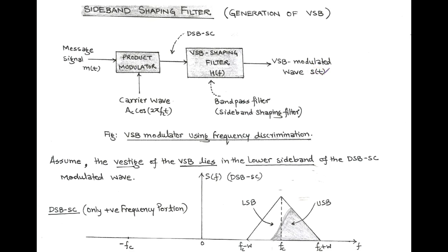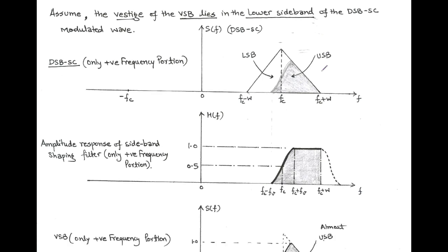Now we explain in detail using the graphical method. We assume that the vestige of the VSB belongs to the lower sideband of the DSB-SC modulated wave, as shown in the figure. We take only the positive frequency portion of the spectrum, and our purpose is to generate this vestigial sideband signal having a vestige or trace belonging to the LSB of the DSB-SC spectrum.